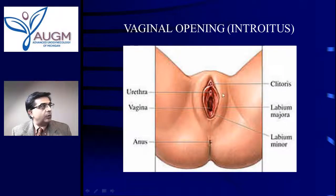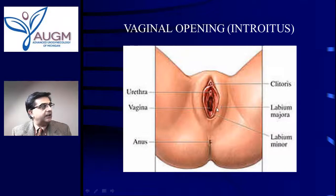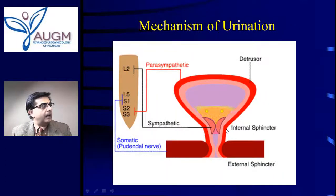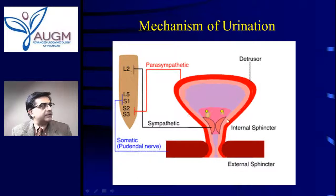When you look from the vaginal opening — also called the introitus — this is how it looks. You have the mons pubis, the clitoris. The urethra is inside the vaginal introitus. There is the hymenal remnant and the vaginal cavity inside. You have the inner lip and the outer lip of the labia, and then this area called the perineum and the anus or rectal opening.